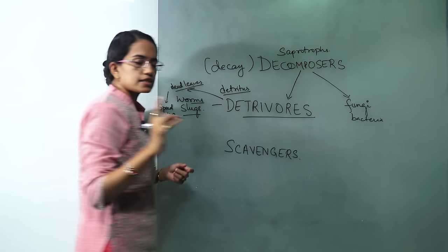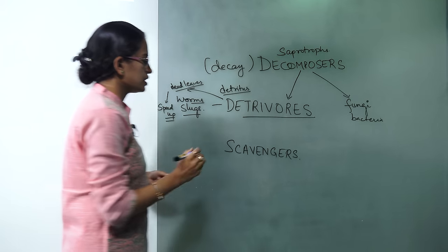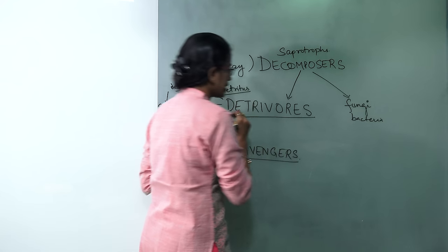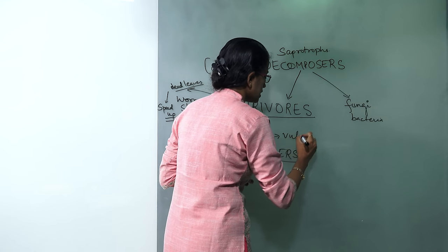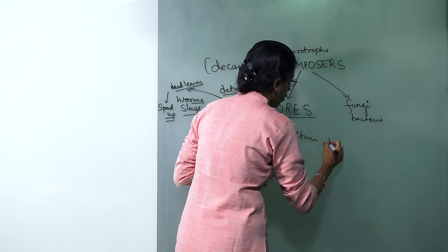There is another major difference between the terms scavenger and detrivores. So when I say scavenger, a good example would be vulture or jackal.